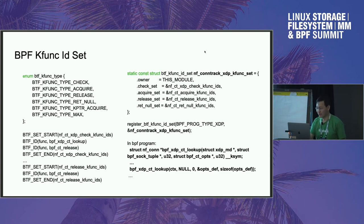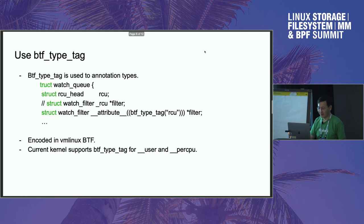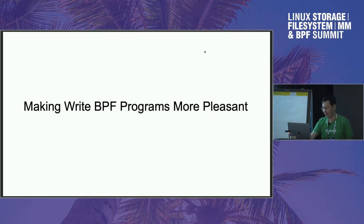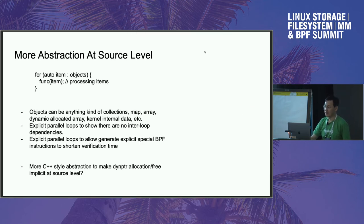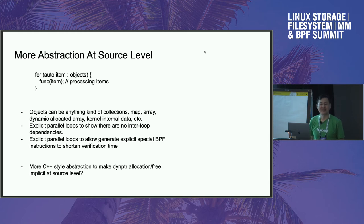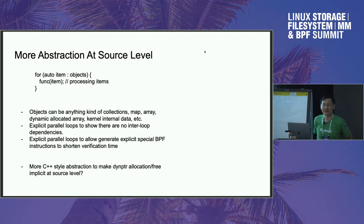Moving to the next topic — future imaginations about making BPF programs more pleasant to write. The first thing is more abstraction at the source level. One more use case not yet mentioned: using BTF tags to annotate BPF code itself. Right now we have static and global sub-programs — global subprogs have advantages in limiting verification complexity, but lose information like integer value ranges that static functions know.